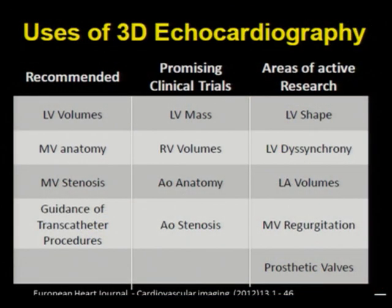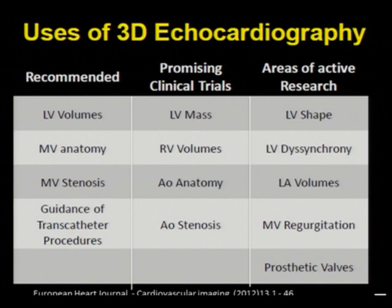The uses of 3D echocardiography — there are some areas with established recommendations. These include mitral valve anatomy and mitral valve stenosis, left ventricular volume, and guidance of transcatheter procedures. There are promising clinical applications in LV mass, RV volumes, aortic stenosis, and aortic anatomy. Active research areas include LV shape, LV desynchrony, LA volume, mitral regurgitation, and assessment of prosthetic valves.